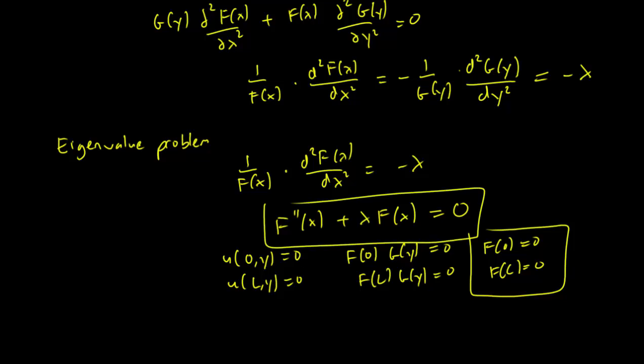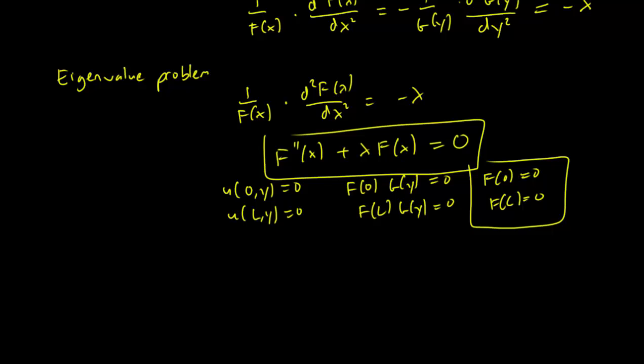And it turns out that this eigenvalue problem, if you solve it, will have the solution lambda equals (n pi over l) squared as the eigenvalues for n larger than 1, or rather let's write down n as 1, 2, 3, and so on, with eigenfunctions sin(n pi over l times x).